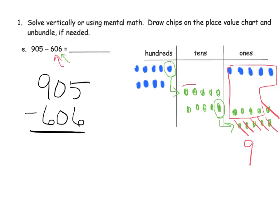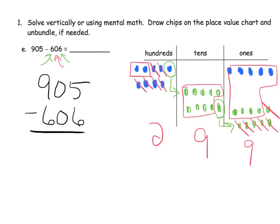It says to subtract zero tens, so nothing to cross off there. We're left with five tens from the top and four from the unbundled group — nine tens total. The unbundled hundred is gone. Then subtract six hundreds: one, two, three, four, five, six, leaving us with two hundreds. Our answer is 299.